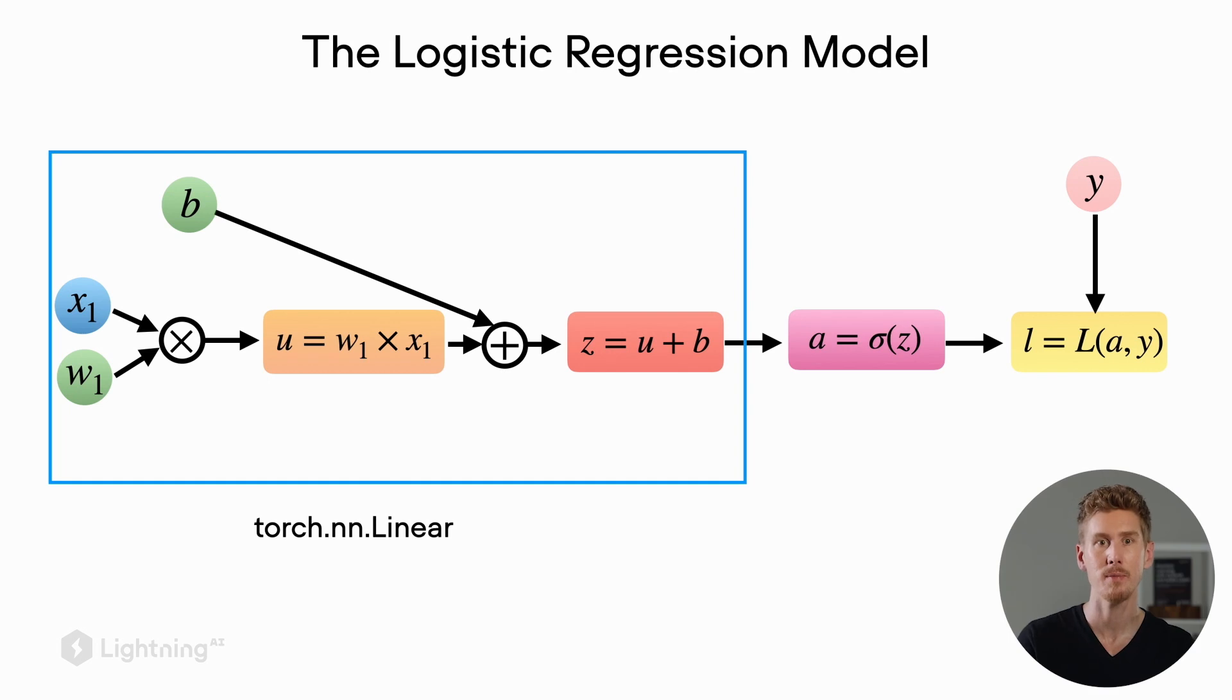While we looked at the training loop in the previous video, we haven't actually defined our logistic regression model yet. For that we are going to use something called torch.nn.Linear to implement this first part of the regression model, and this is actually something we will use a lot later on when we implement deep neural networks. In other words, torch.nn.Linear is the neural network layer that computes this weighted sum.